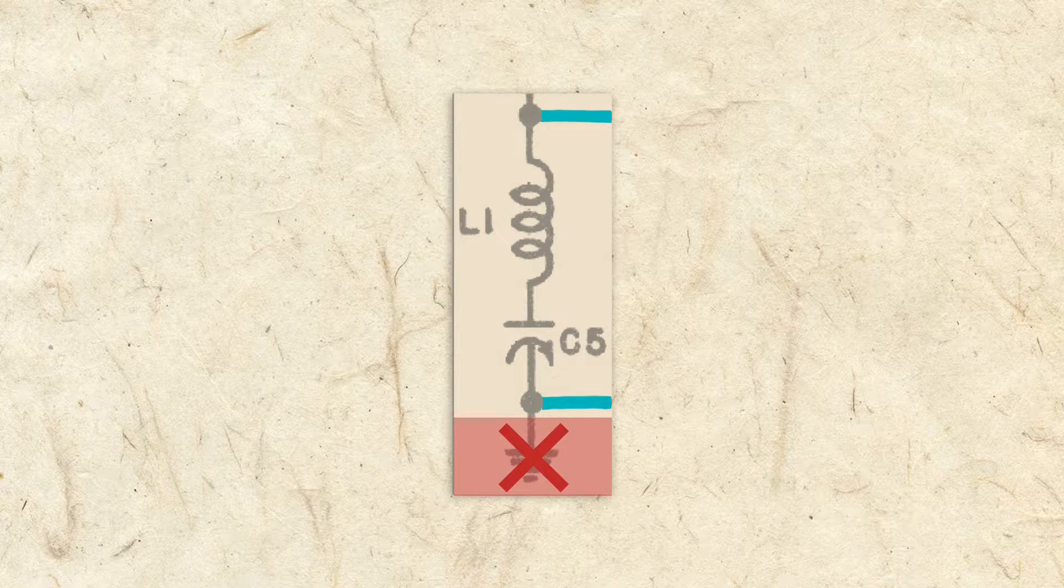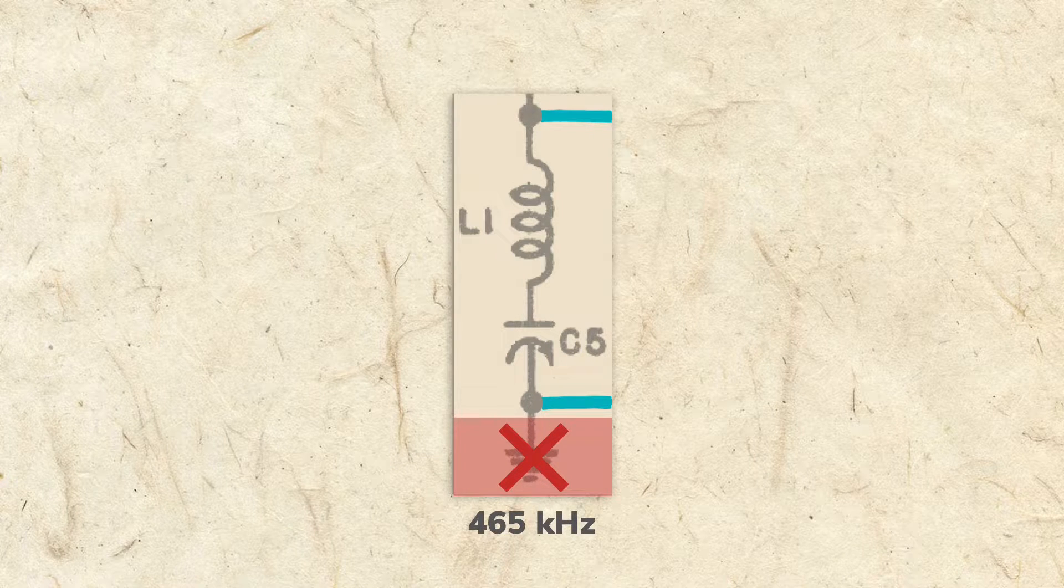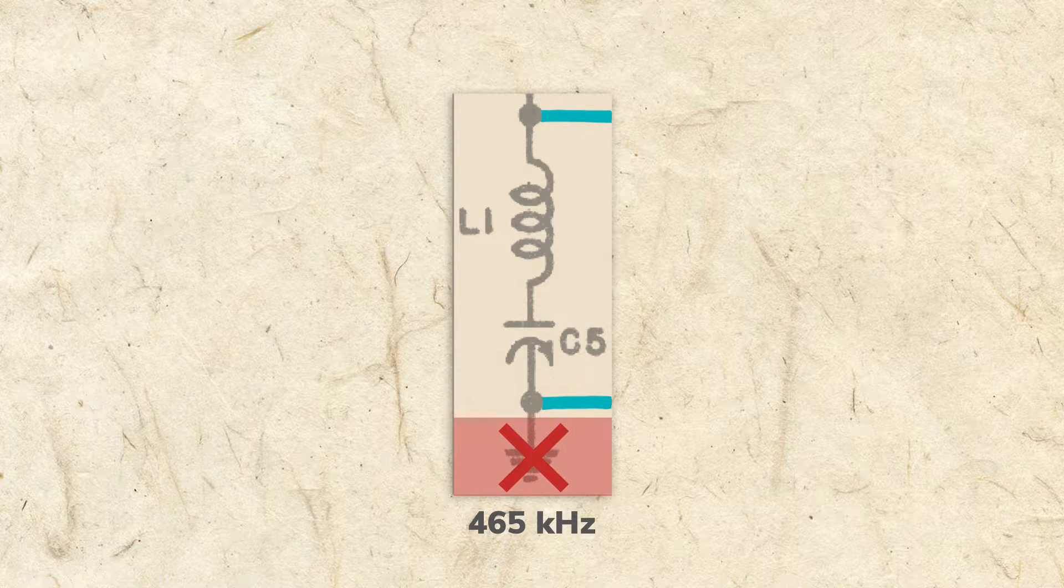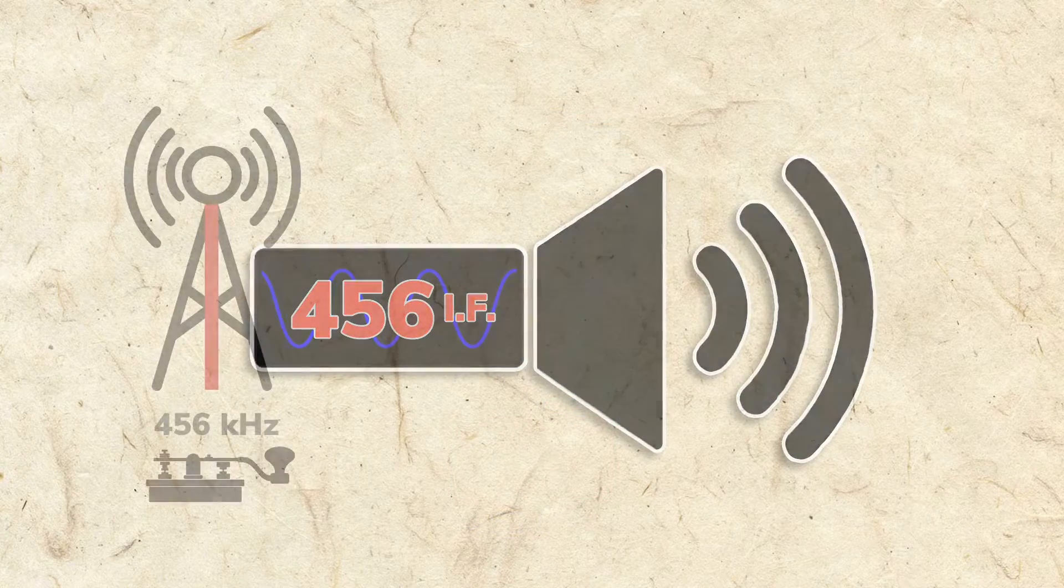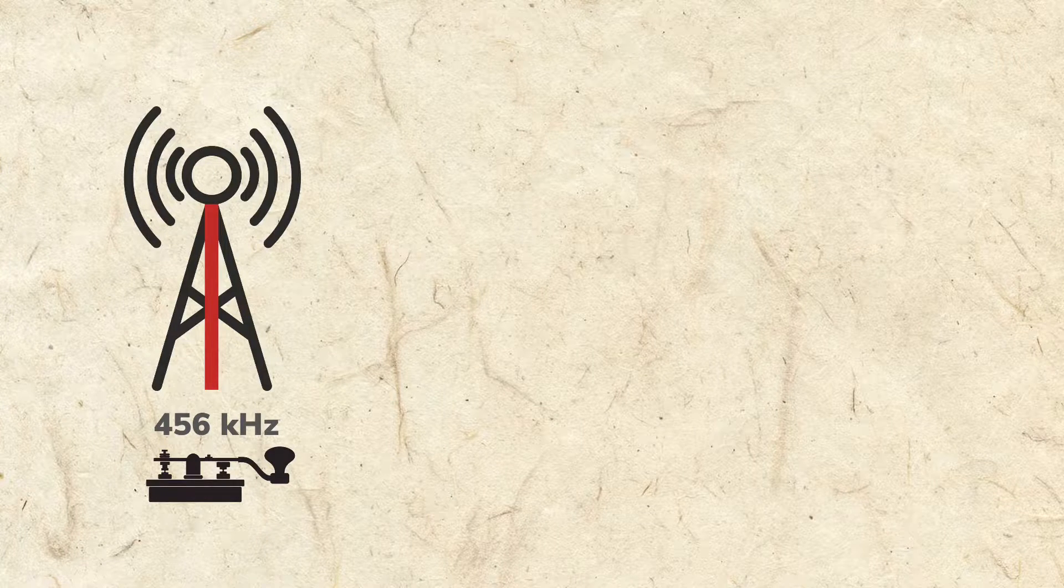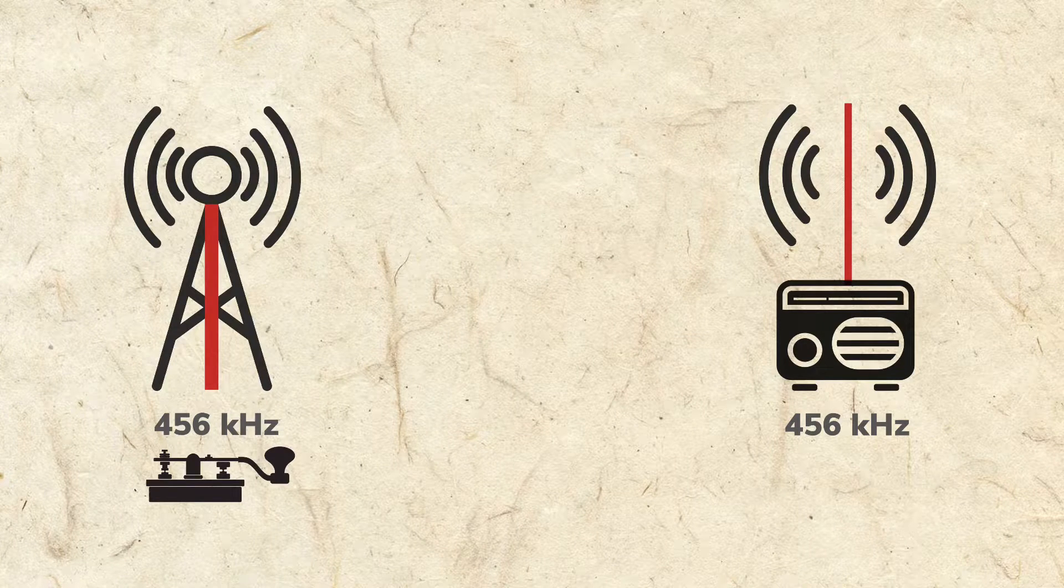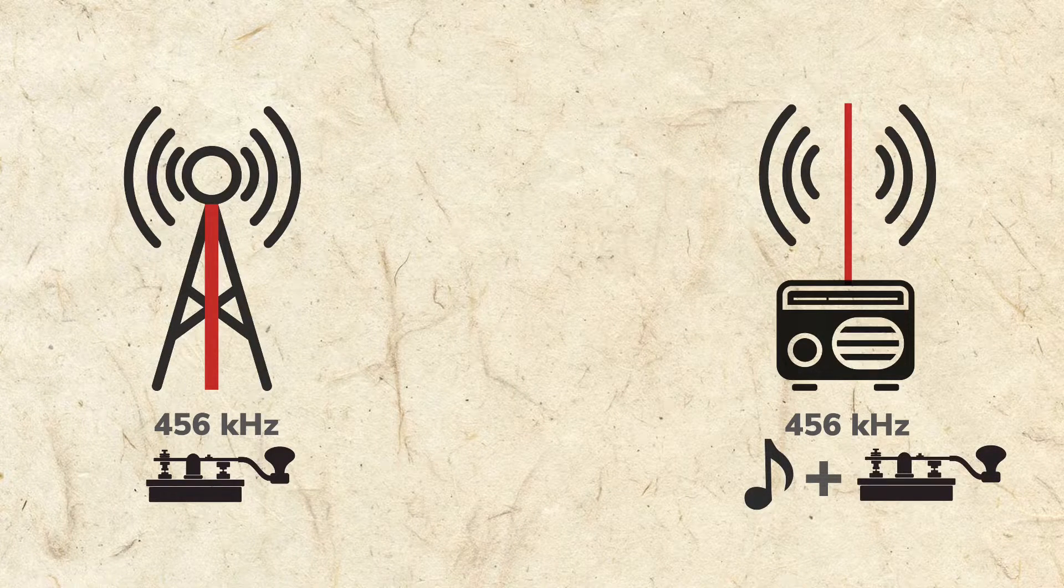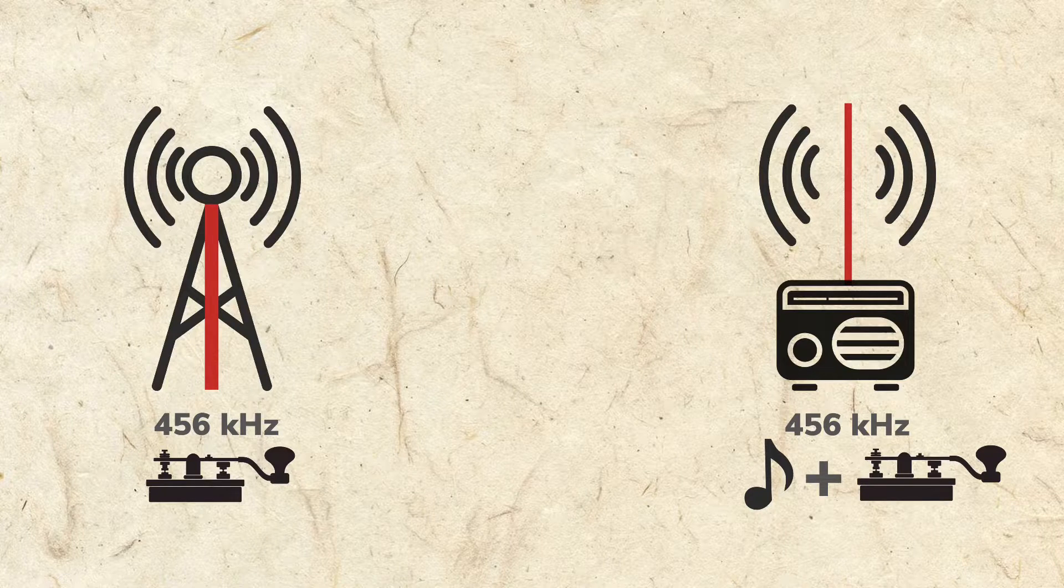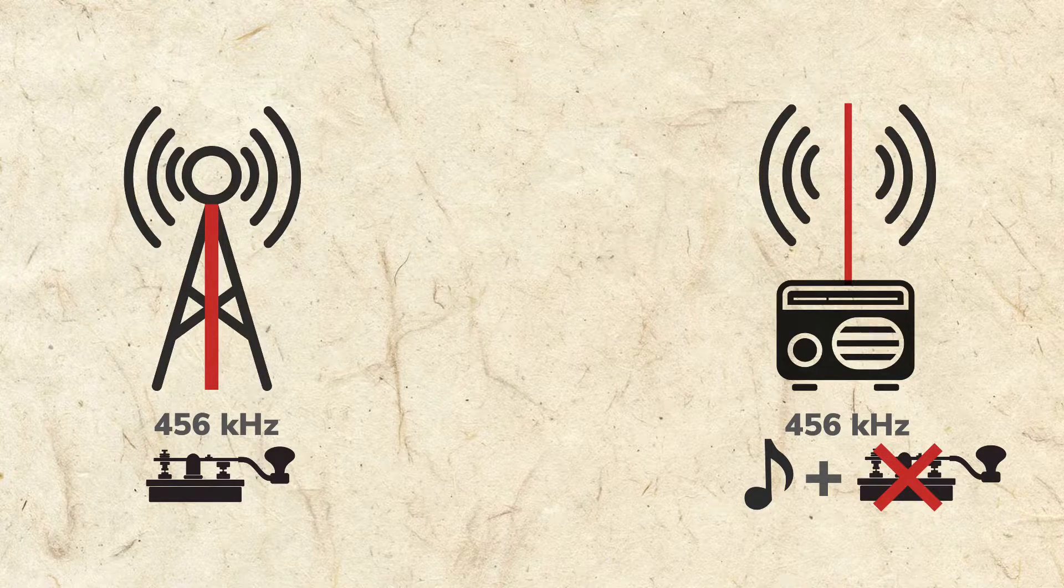The frequency that the radio wants to block is 456 kHz. As you'll learn, this is the radio's important intermediate frequency. Unfortunately, some marine transmitters of the day broadcasted Morse code at the same 456 kHz, and a nearby AM radio could pick up the Morse code, which would be heard over the radio broadcast. A properly adjusted wave trap would filter the Morse code before it could cause interference.